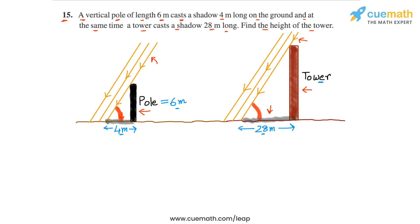This leads to an interesting conclusion. Consider the triangle formed by the top of the pole, the foot of the pole, and the tip of the pole's shadow — let's call these three points A, B, and C. Triangle ABC is a right-angled triangle.